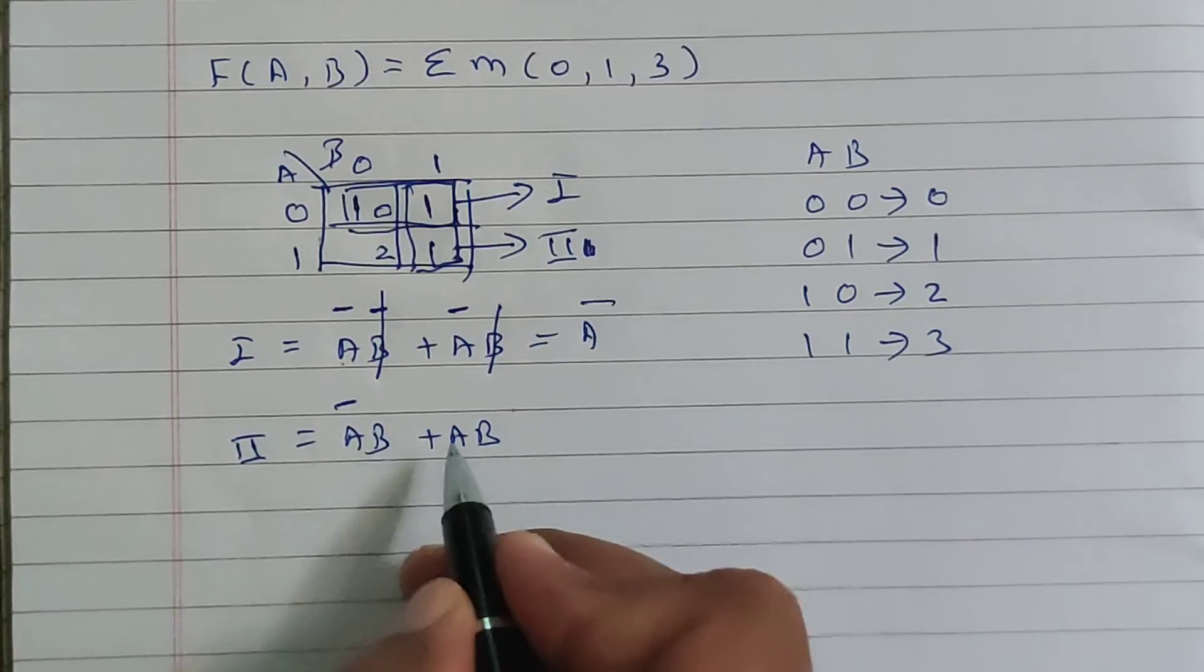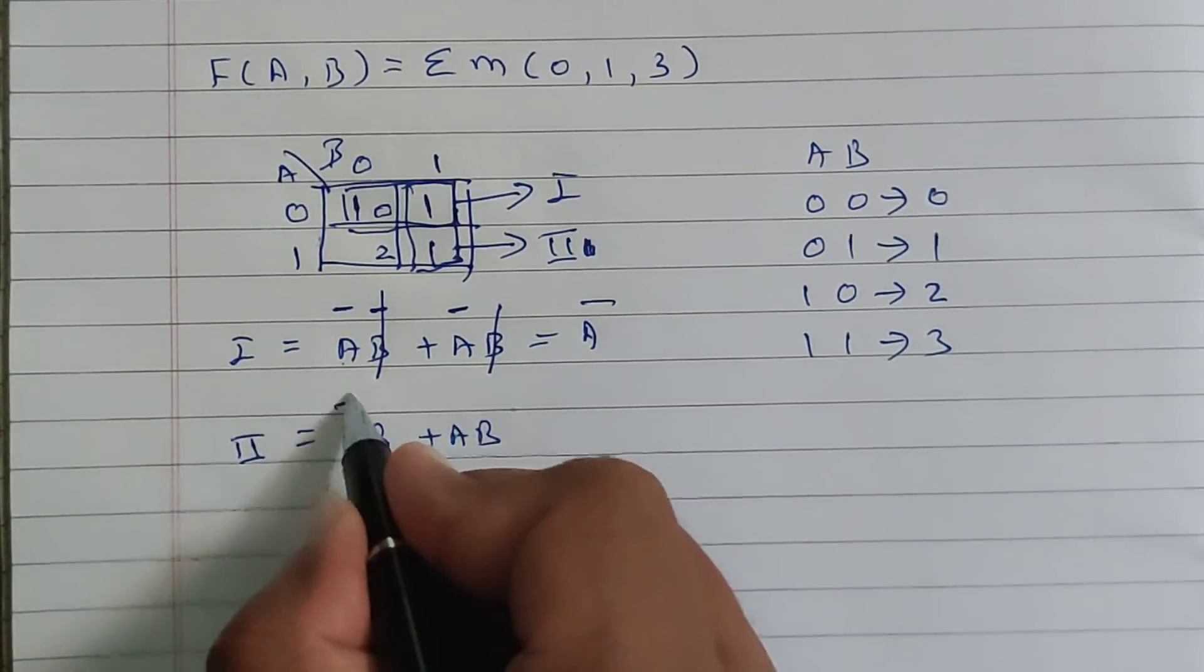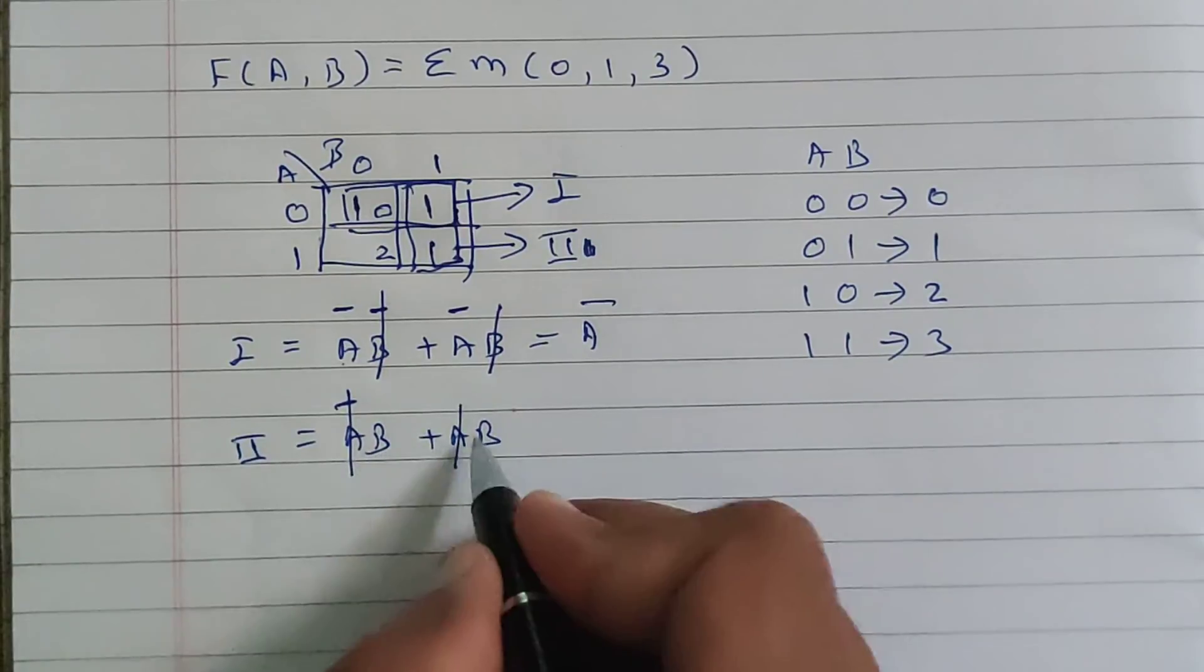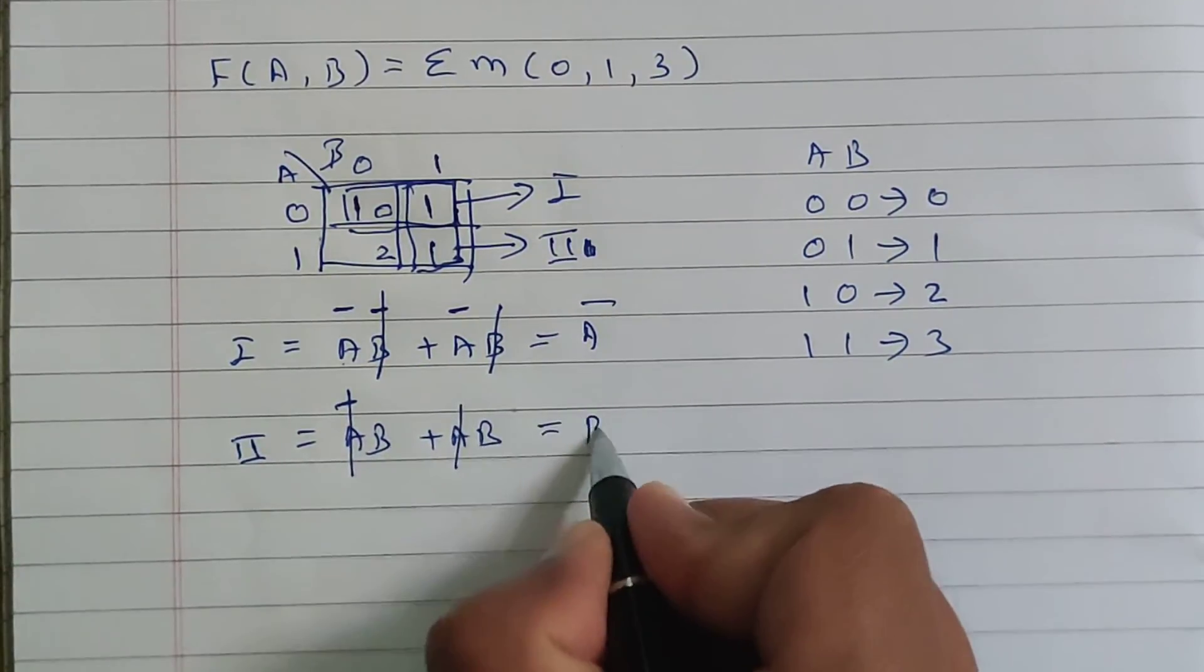And over here, A bar and A is there. A is changing its value. So we will cancel that. And B plus B is there. Finally, we will get B.